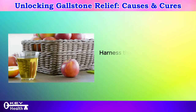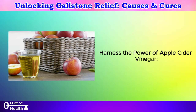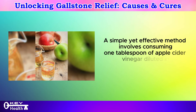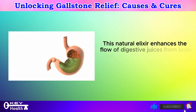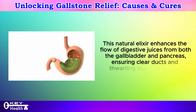Number 5: Harness the power of apple cider vinegar. A simple yet effective method involves consuming one tablespoon of apple cider vinegar diluted in a glass of water before each meal. This natural elixir enhances the flow of digestive juices from both the gallbladder and pancreas, ensuring clear ducts and thwarting stone formation.